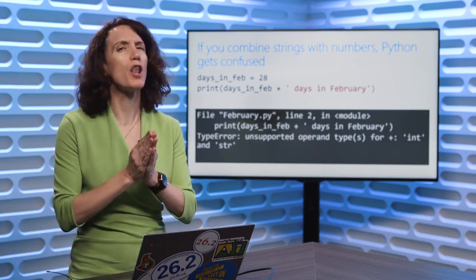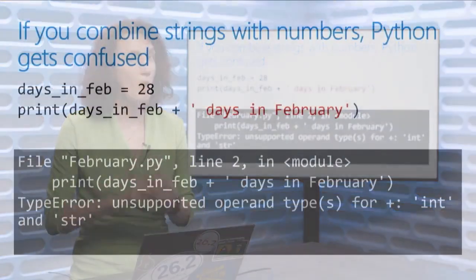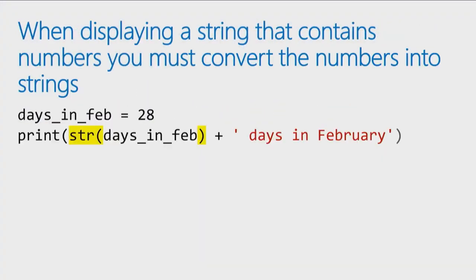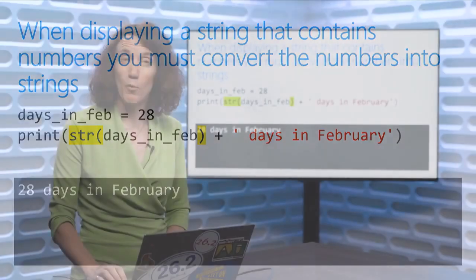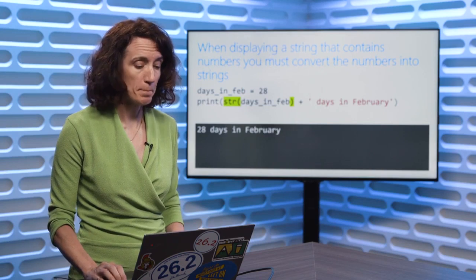So we have to do what's called type conversion — get used to this, you're going to see it a lot. To convert any data type to a string in Python, you just call the str function. You call str, pass it days_in_february (which is currently a number), and now it's going to treat that as a string. Python says, 'Oh, you want to concatenate string plus another string? I know what to do' — puts them together and displays our message on the screen correctly. The str function is going to save you a lot when you start mixing numbers and strings.